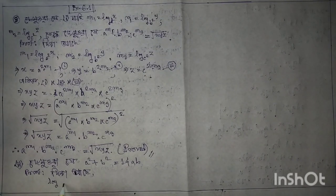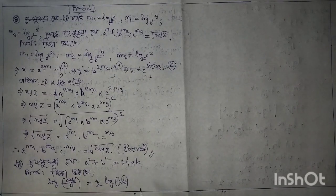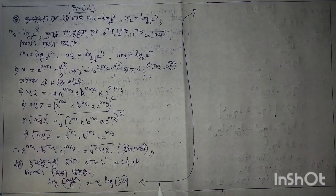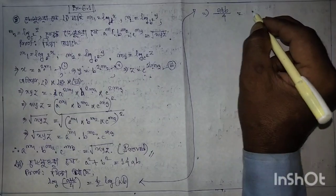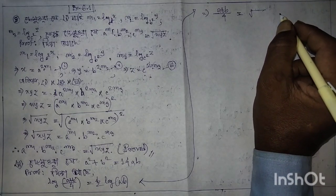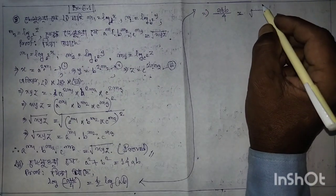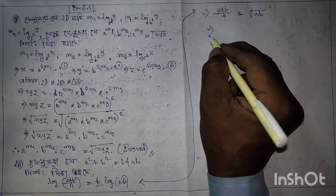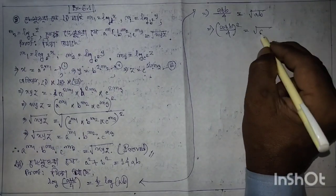Log in class: (a plus b) divided by 4 is equal to half log of ab, and place (a plus b) divided by 4 is equal to the root of 1 and the root of 1, and place a divided by 4 is equal to half log ab.